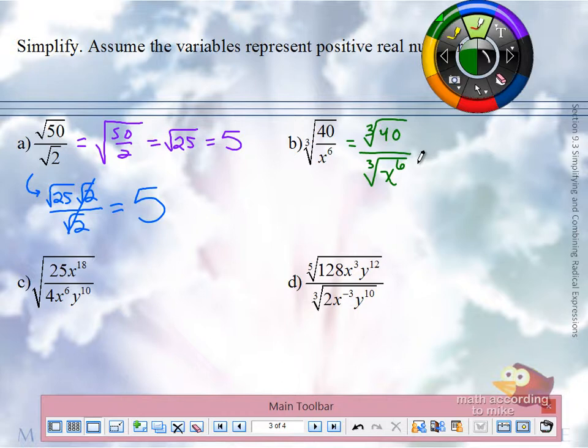40 is not a perfect cube, but it contains one. And what does it contain? 8. And what's left over? x to 6 is a perfect cube. What cube is x to 6? x squared.